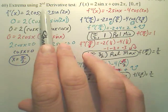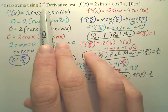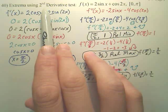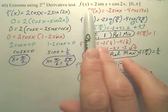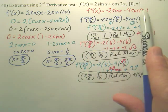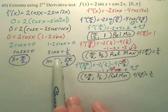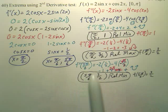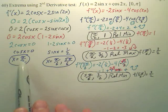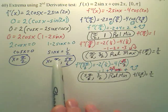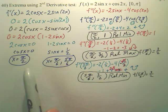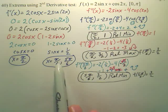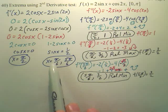To find extrema using the second derivative test, you find the second derivative and plug in these three values. With the first derivative test, you'd make intervals using the three critical numbers as break points, then check both sides to see how the derivative changes from positive to negative and so forth.